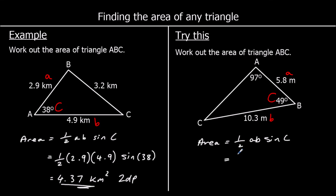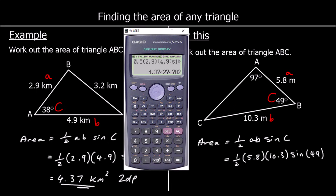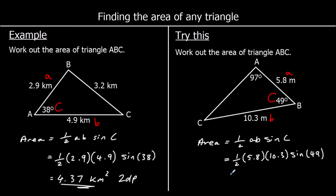So we're going to have half times 5.8 times 10.3 sine 49. Typing that into the calculator: half times 5.8 times 10.3 sine 49 gives 22.54 to two decimal places. The units are meters this time, so meters squared because it's area — 22.54 meters squared to two decimal places.